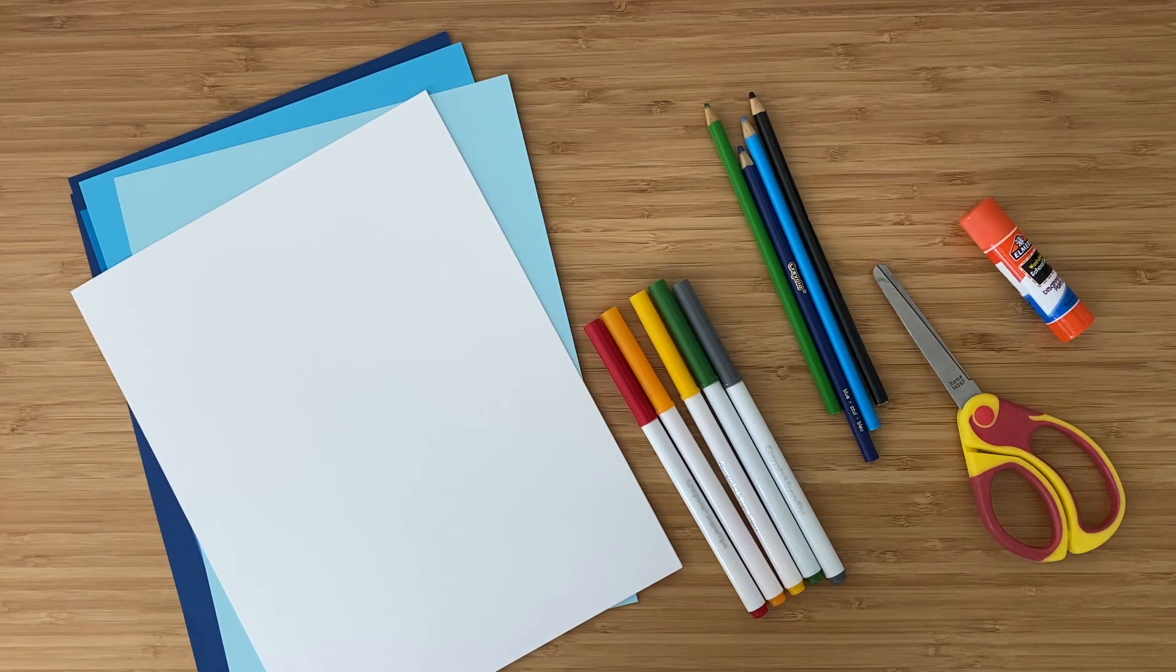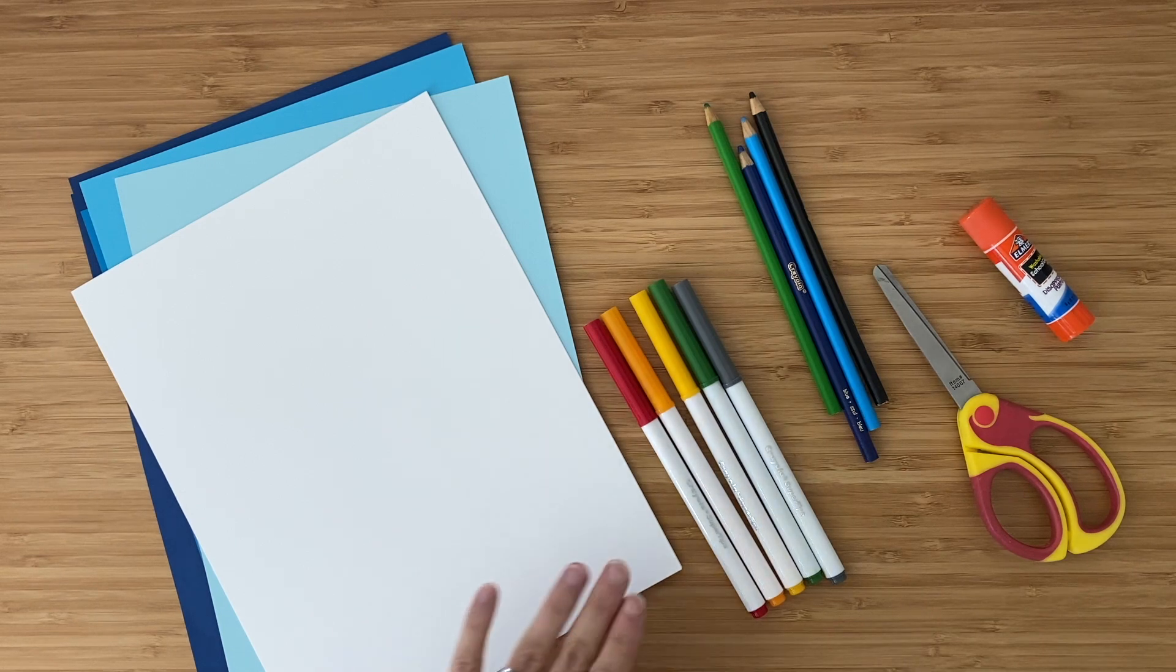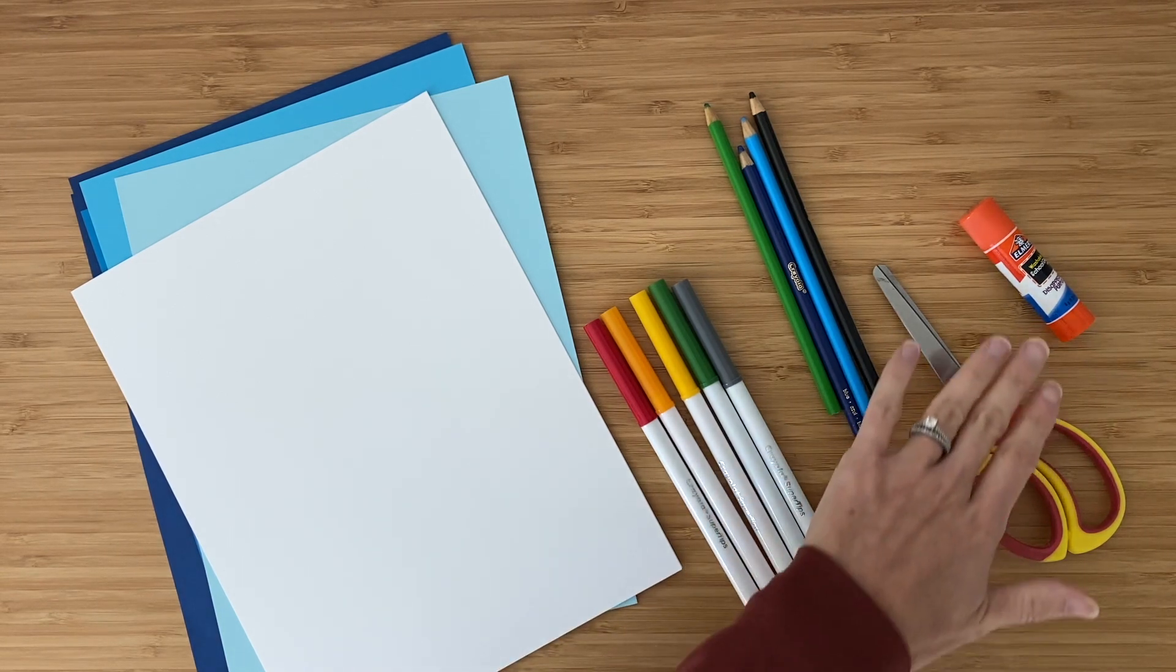For the ocean zones project you'll need paper, fine tip markers or colored pencils, scissors, and glue.